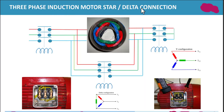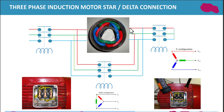In this 3-phase induction motor star-delta connection, you can see one is the red coil, one is the green coil, and one is the blue coil. Line 1, line 2, and line 3 are the three phases. When this contactor becomes closed, current passes through to these coils. This is the other contactor which will also become closed.